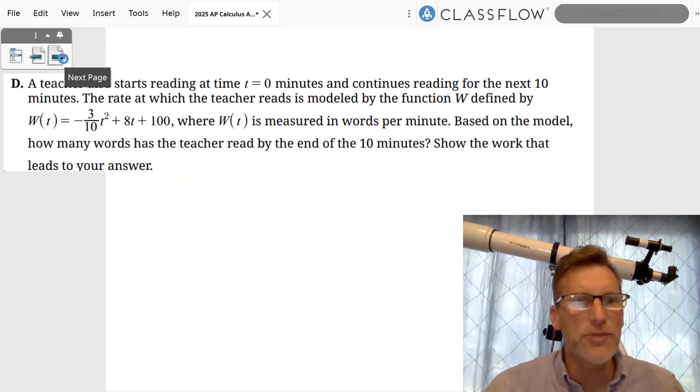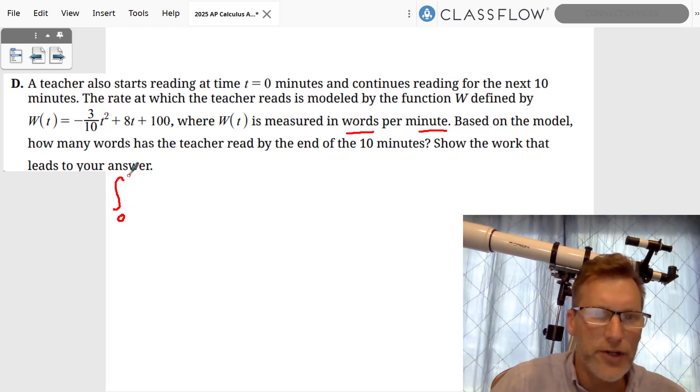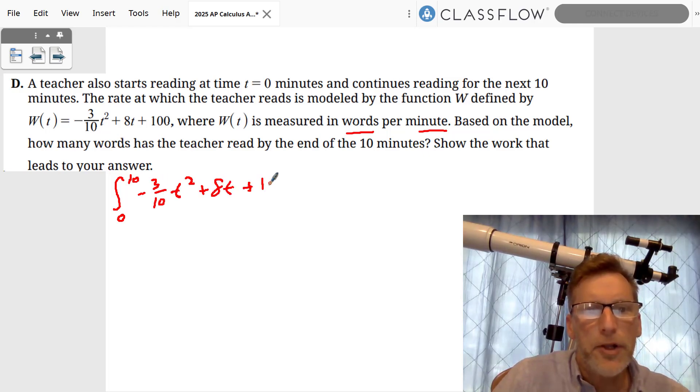Then Part D, the last part. They give us a brand new function, w of t, and w of t is in words per minute. You can see this is the teacher reading. It says, how many words has the teacher read by the end of 10 minutes? Which means we're going to do an integral from 0 to 10 of negative 3/10 t squared plus 8t plus 100, and we're going to do that integral with respect to time.